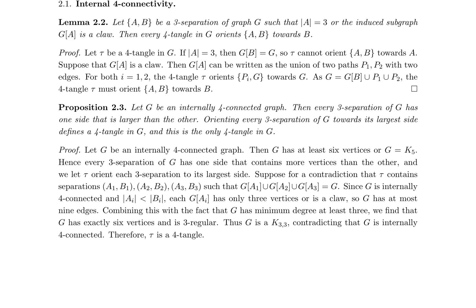These lemmas lay the groundwork for a pivotal proposition, which proves that in an internally four-connected graph, every three-separation has one side larger than the other. Orienting these separations towards their largest side defines the only four-tangle in the graph, a crucial finding with significant implications for graph theory. This characterization of four-tangles through connectivity properties provides a novel framework for understanding graph structures.